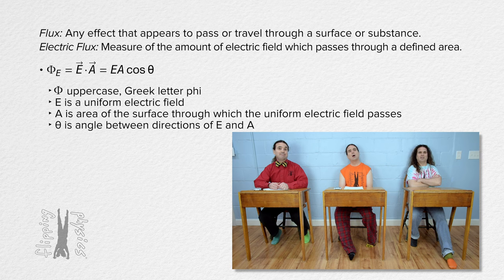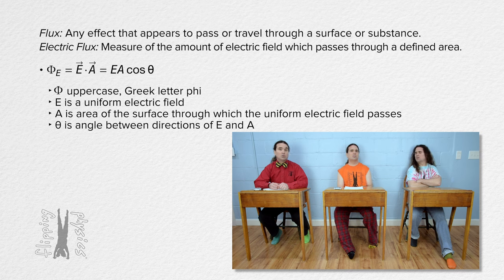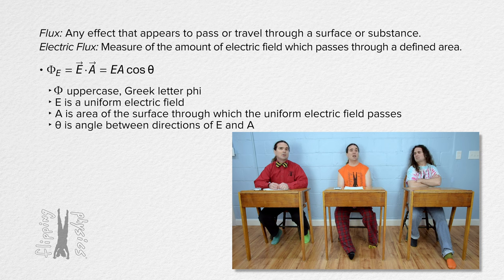Area can have direction? Yeah. The direction of an area is always normal to the plane of the area, just like the direction of angular velocity is normal to the plane in which the object is rotating.